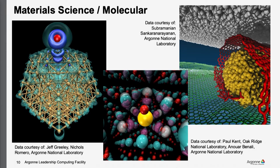Here are some examples of various materials science applications. The one on the right in particular is a process called super lubricity. What we're looking at are all carbon atoms; the yellow object in the middle is a gold nanodiamond, and the red scroll wrapping around it is the source of this super lubricity — it wraps around the nanodiamond and reduces the surface area between it and the substrates above and below, reducing the friction.